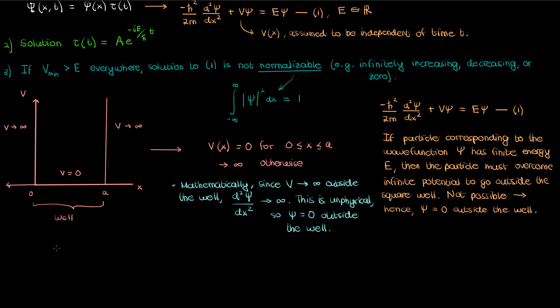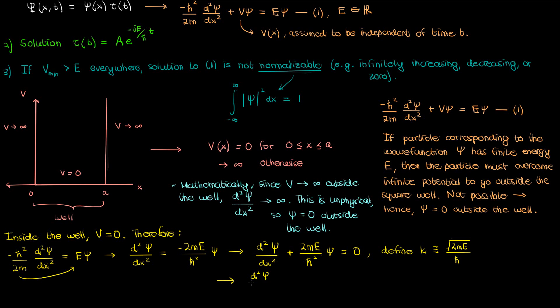So now that we've established that small psi is 0 outside the well we can move to the part inside the well. V is 0 inside the well so our equation 1 becomes the following. Isolating the second derivative of small psi and moving everything to one side gives us this equation. And to simplify this we'll define a constant k as the square root of 2mE over h-bar. When we do that our time independent Schrödinger equation becomes the second derivative of small psi with respect to x plus k squared times small psi equals 0.